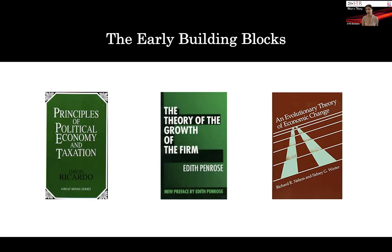When strategic management research thinks about the resource-based view or capabilities, the idea started with the thought process that there is competitive heterogeneity between firms that can be characterized by their resources and capabilities. This heterogeneity, which can persist in meaningful and durable ways across firms, can be a source of either advantage or disadvantage. The early building blocks go back to Ricardo and the notion of Ricardian rent — the idea that ownership of unique factors of production can be a source of economic value.